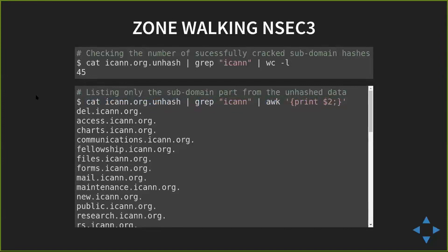Now you know that you can walk an NSEC zone and an NSEC3 zone. This is a classic example where a security mechanism actually makes you a little insecure. Certificate transparency and DNS zone walking are both examples of that — HTTPS is supposed to protect you but makes you a little vulnerable, and DNSSEC makes you prone to zone walking.